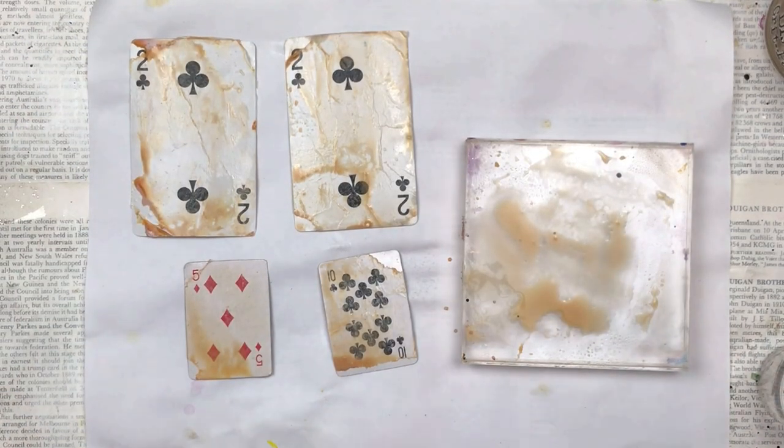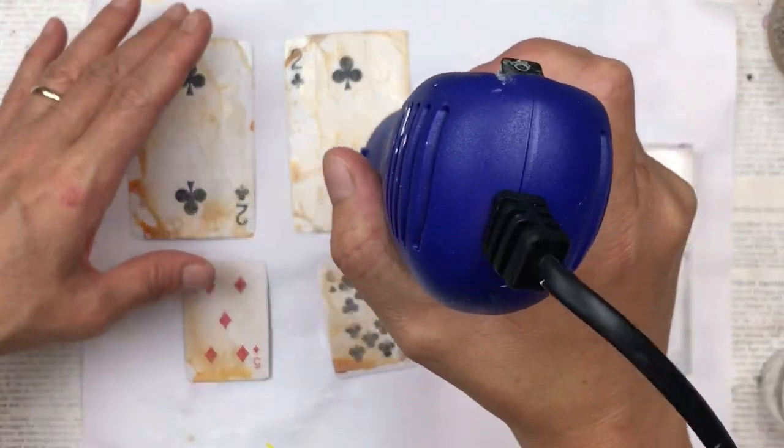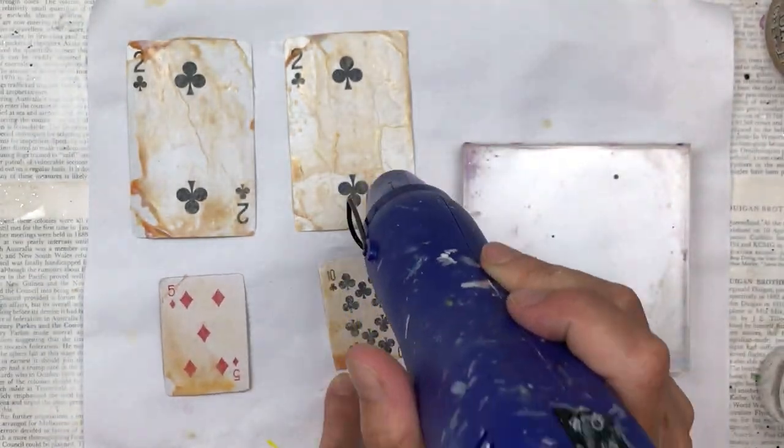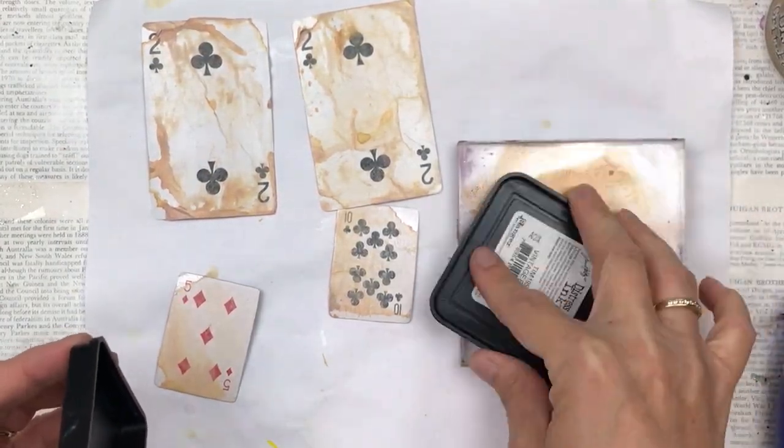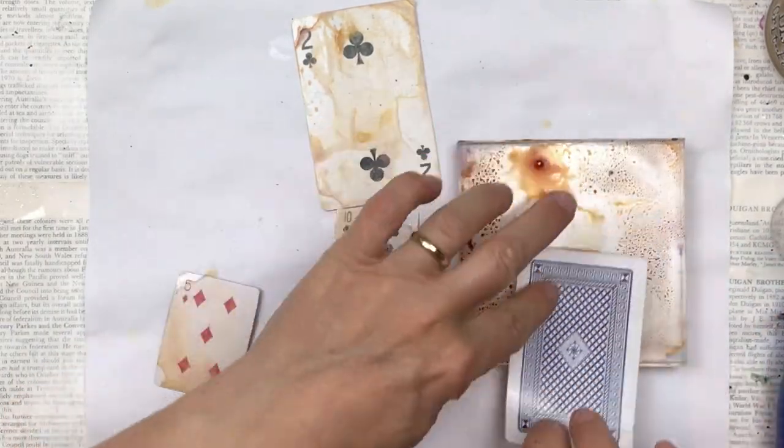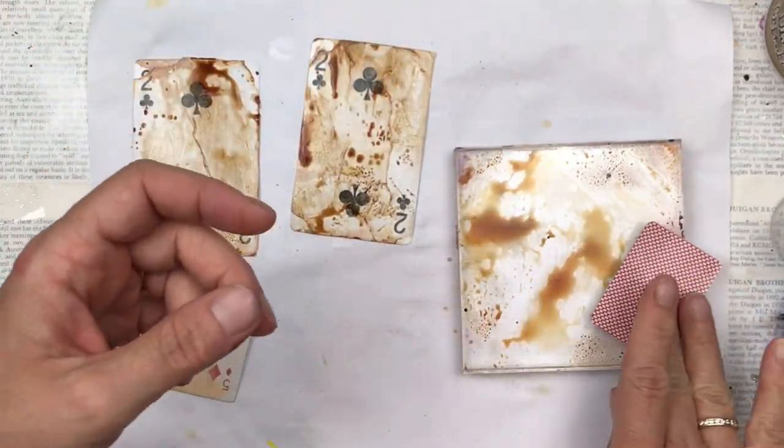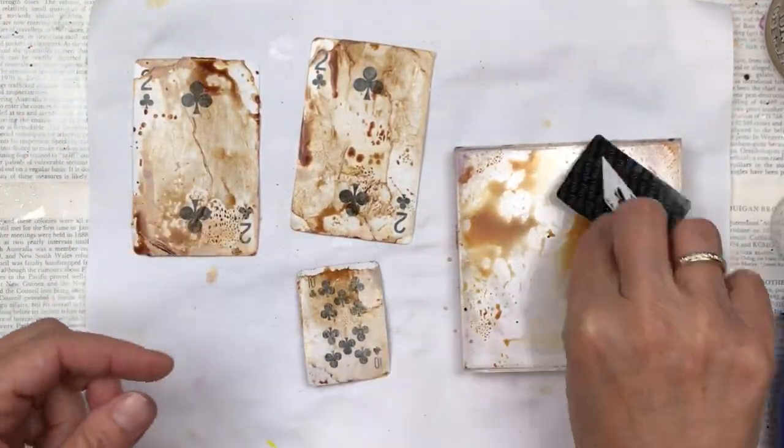I'm going to add a few layers and I dry each layer in between, and I always start with my lightest color first. Next I'm adding the color called Vintage Photo. This is in an ink pad, so I just press the ink pad onto the acrylic block, add some water, and move the cards around to pick up the color.